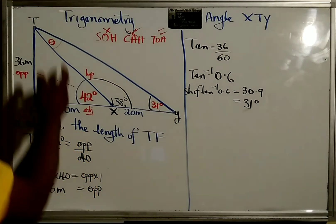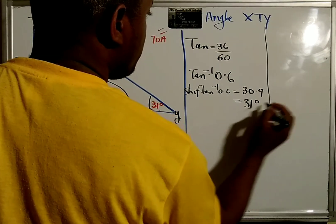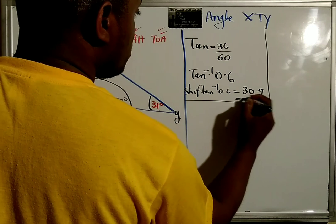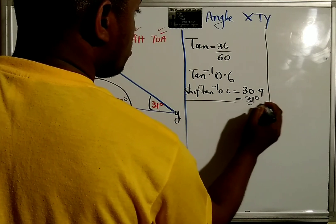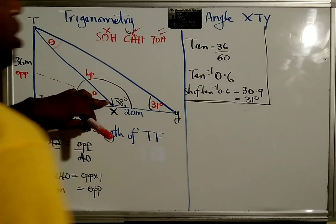So now we can easily find this angle here by simply saying angles in a triangle sum up to 180 degrees. So it would be 180...